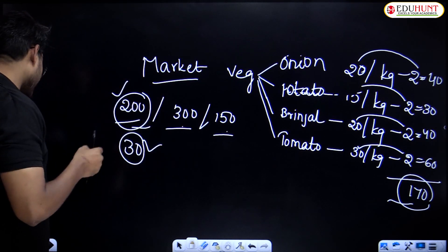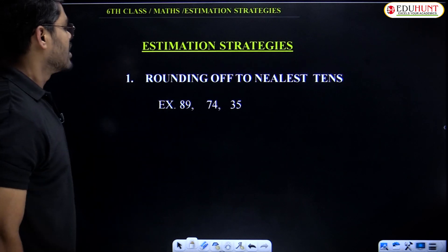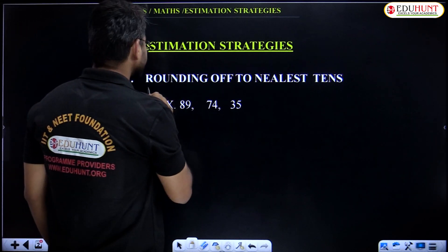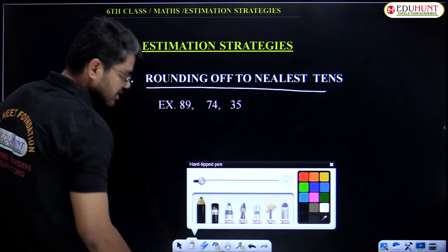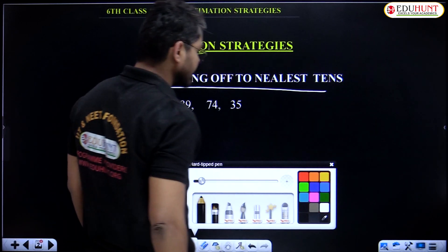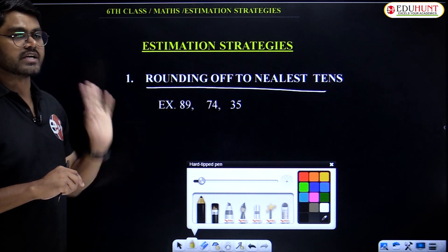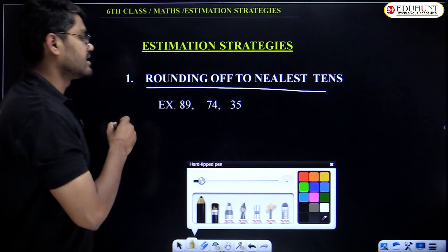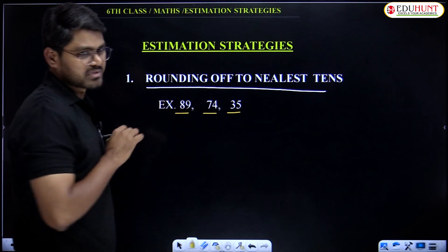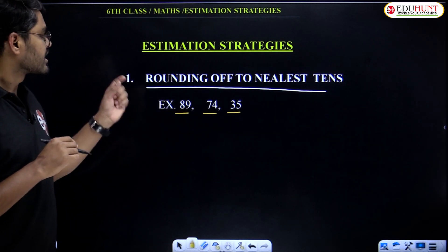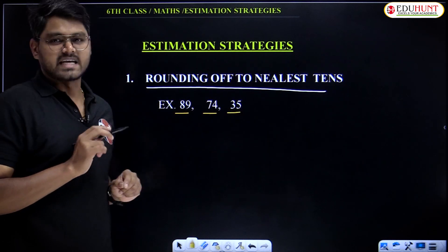Let's go deep into the concept. Estimation — rounding off to the nearest tens. First, learn the concept, then we solve the questions very easily without any doubt. Rounding off to the nearest tens. See here: 89, 74, and 35 — three numbers are there. How do we calculate the round figure of these numbers to the nearest tens?